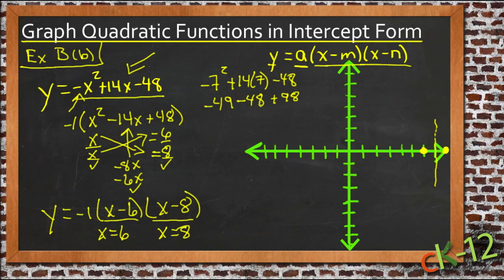Negative 49 and negative 48, well, two 48's are 96, so that would be negative 97. Negative 97 plus 98 would be 1. So y equals 1 when x equals 7.